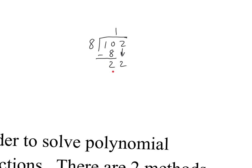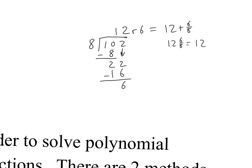Does 8 go into 22? Yes. The biggest multiple of 8 less than 22 is 16, so it goes 2 times. 2 times 8 is 16. I write 16 and subtract: 22 minus 16 is 6. So we have a remainder of 6. That really means 12 and 6 eighths, which reduces to 12 and 3 fourths, or 12.75.